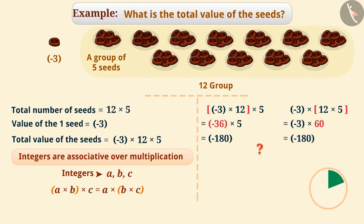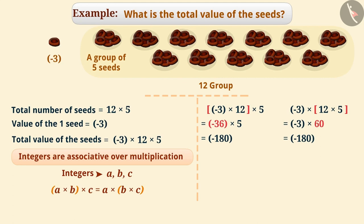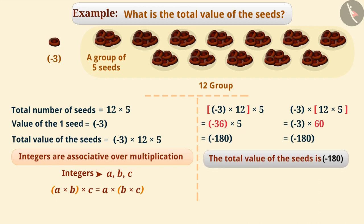Think for a while. Absolutely correct — because integers are associative over multiplication. Grouping the numbers in any order gives us the result minus 180. That means the total value of the tamarind seeds is minus 180.